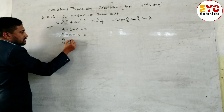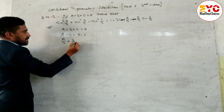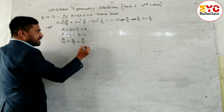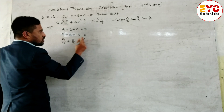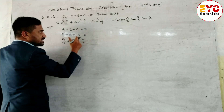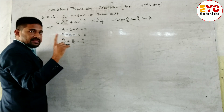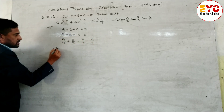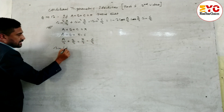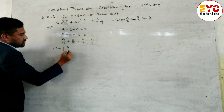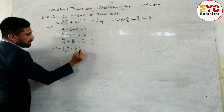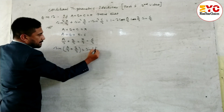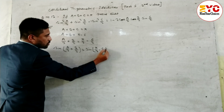Dividing both sides by 2, we get a by 2 plus b by 2 is equal to pi by 2 minus c by 2 — that is 90 degrees minus c by 2. Taking sin both sides: sin(a by 2 plus b by 2) is equal to sin(pi by 2 minus c by 2).